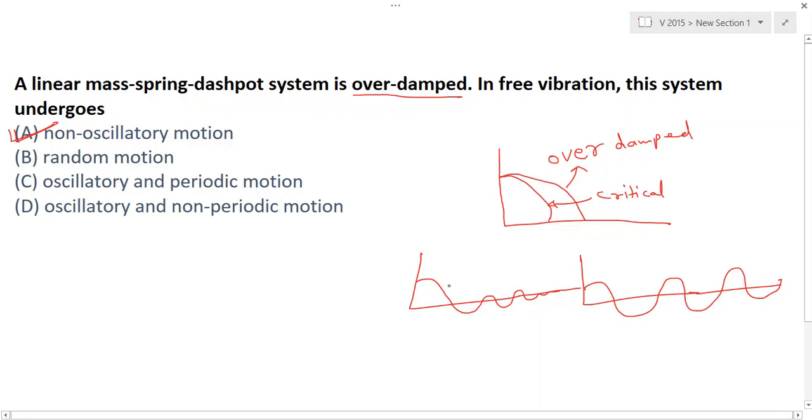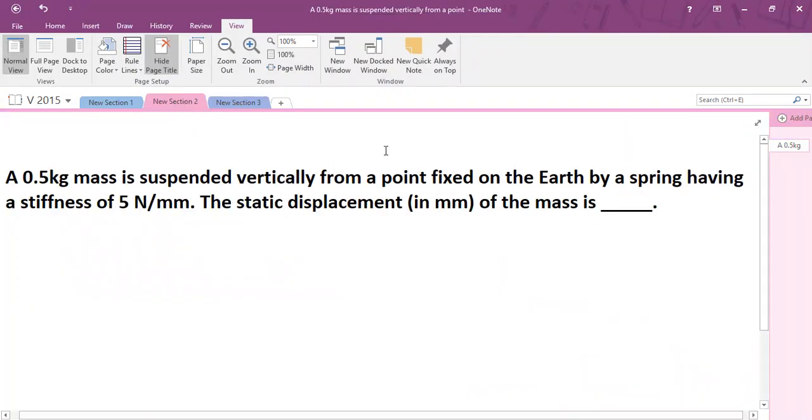This is the underdamped graph. So we must know all the graphs with different conditions. For this question, A is the right option. Next question.